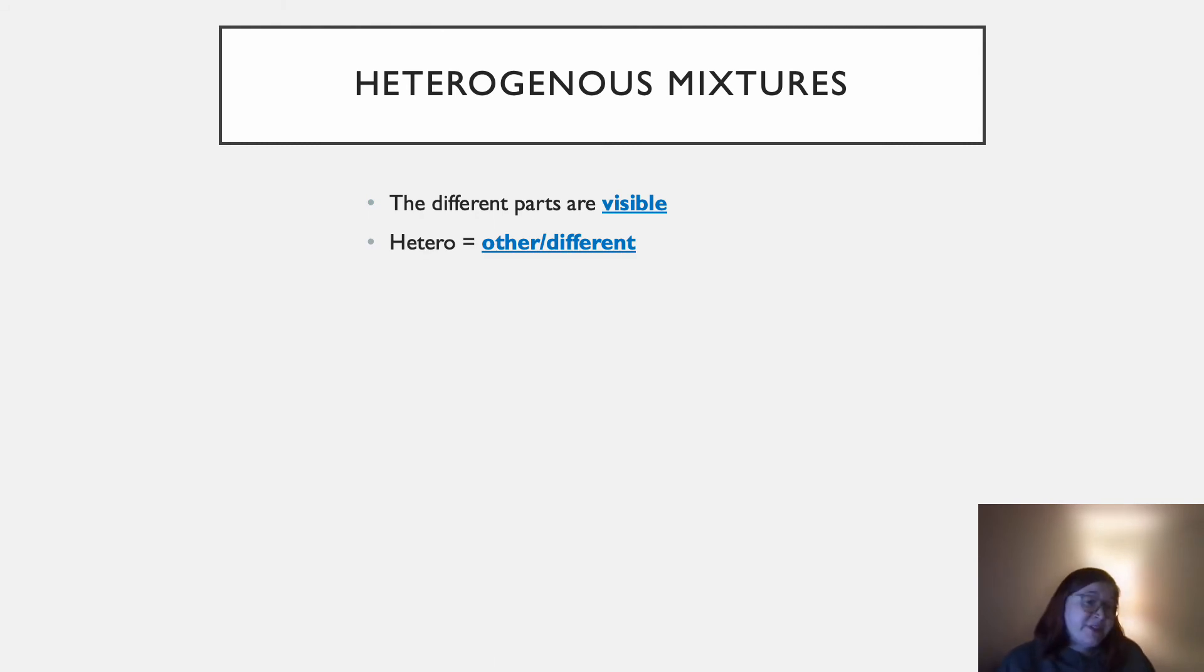Hetero, the prefix means other or different. So just like with homo, the way I remember this is to think heterosexual means someone who prefers relationships with people of a different gender than themselves. So hetero means different or other.